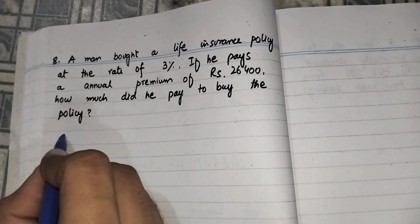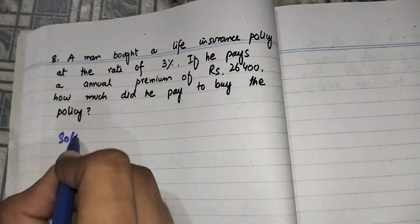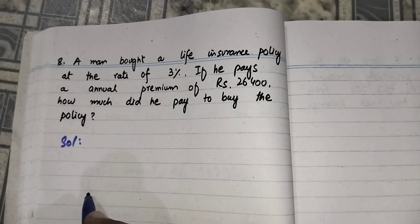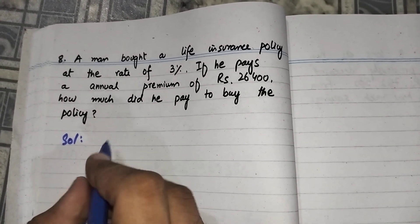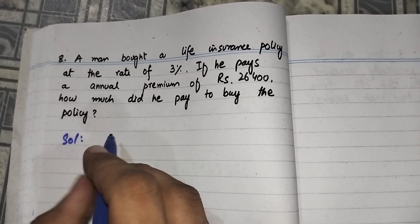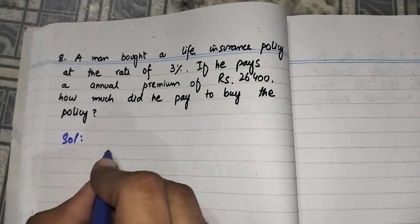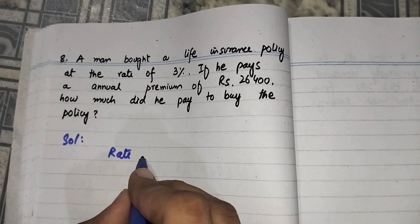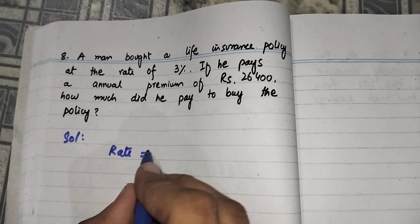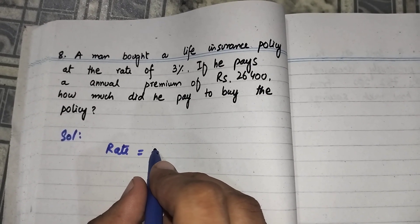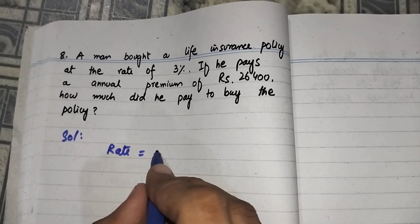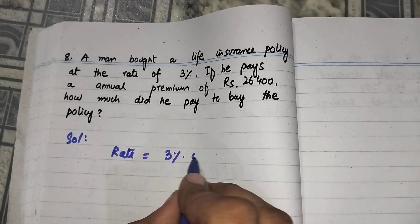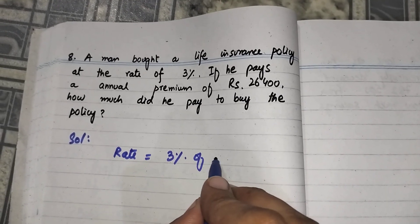Bismillahirrahmanirrahim. Question number eight: a man bought a life insurance policy at the rate of three percent. This rate is for the premium amount which he has to pay annually, so the rate will be three percent of the policy amount.